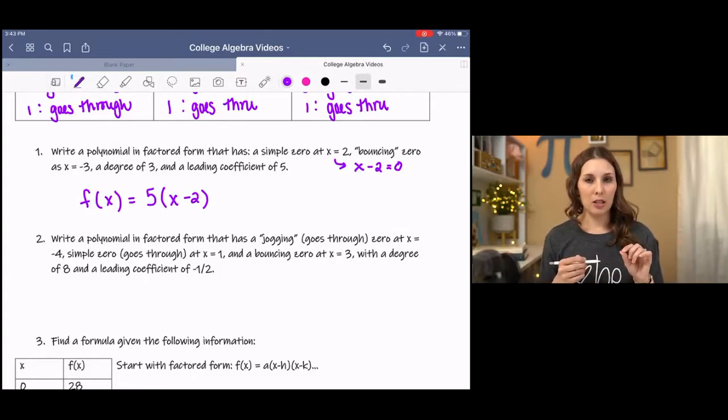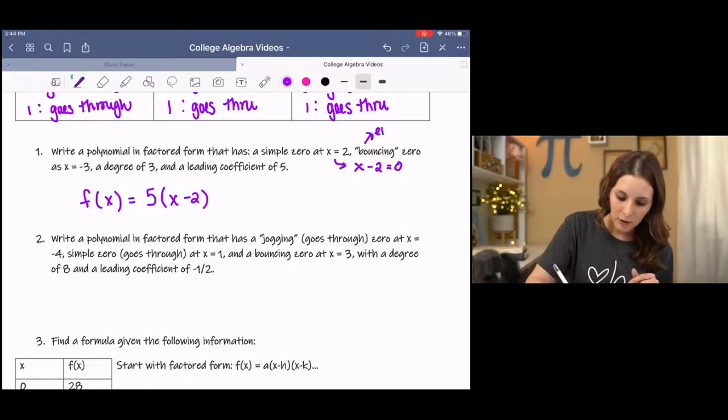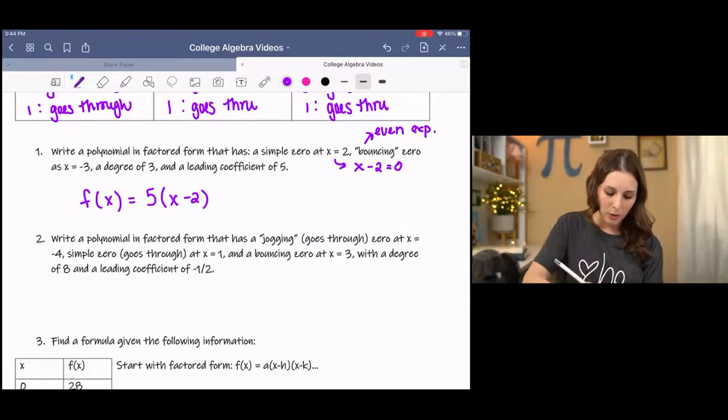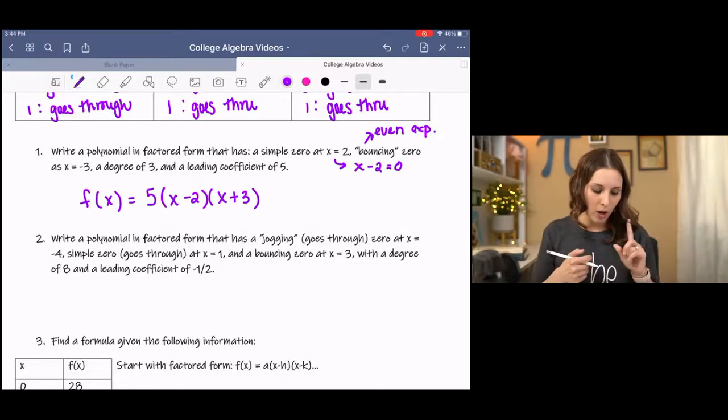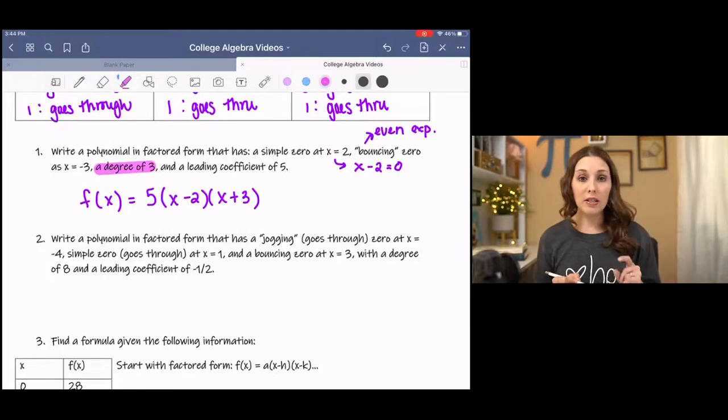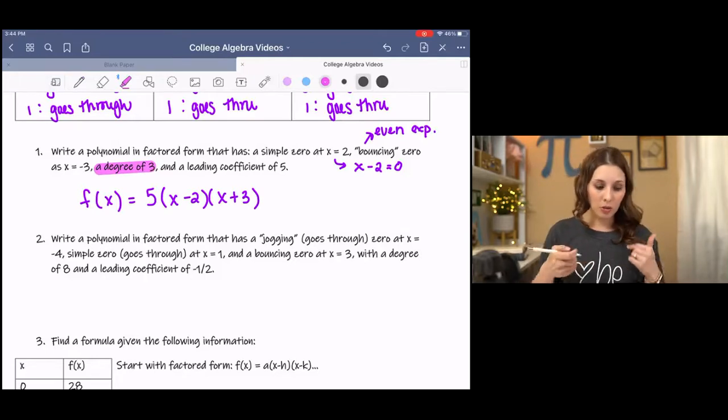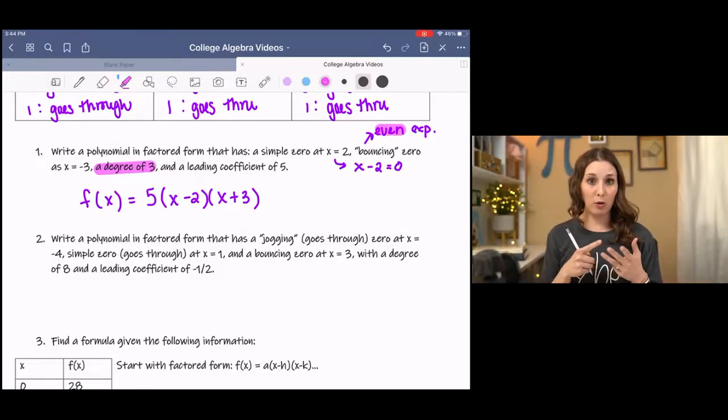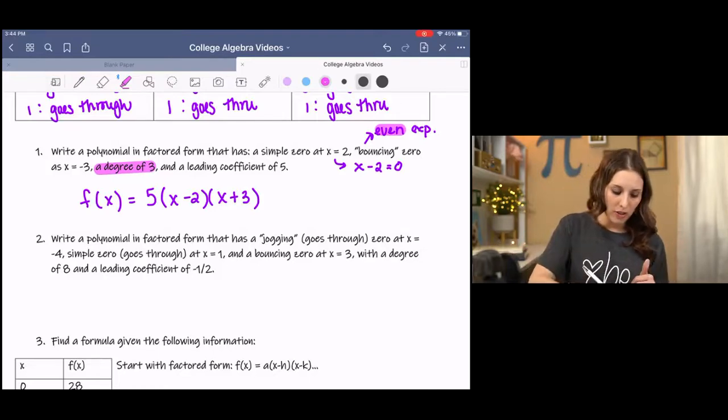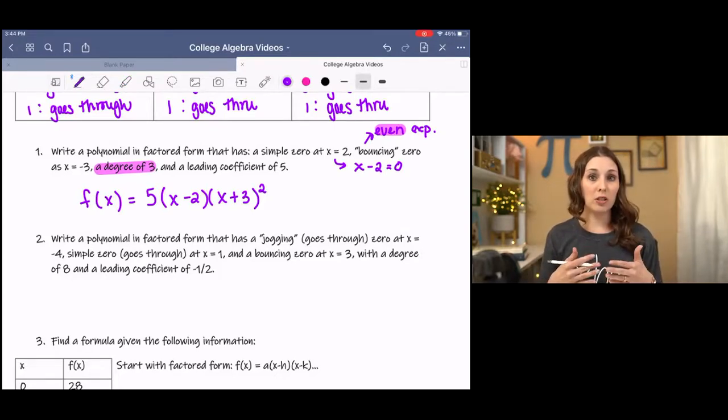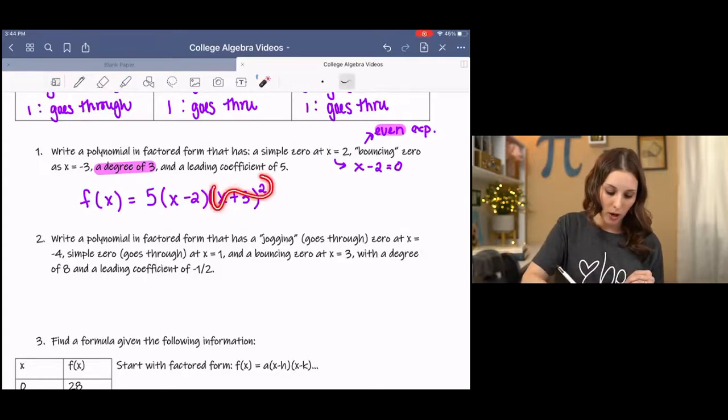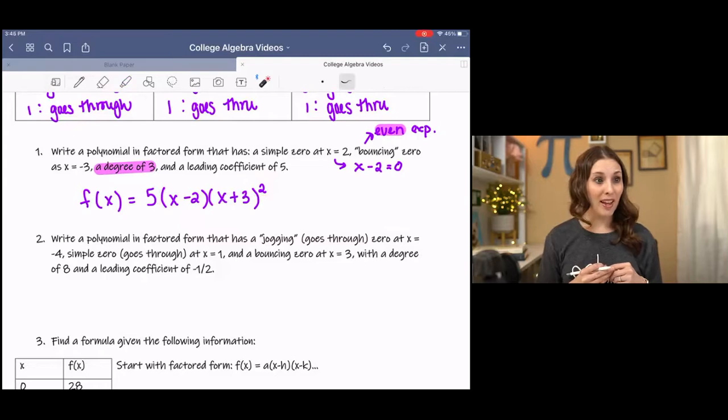But we're going to kind of pin that for a second, because we do know it's bouncing, so that indicates an even exponent at x equals negative three. So we're going to add three to the other side to make it a factor. And we also know that it has a degree of three. This means that all of the exponents on the x's need to add up to three, because we would be multiplying all the x's together. We also know that this is even, which means it has to be raised to the second, fourth, sixth, eighth, whatever power. So if this one is definitely to the first power, then this one needs to be to the second power so that it satisfies both conditions. It's a bouncing zero, and we have an entire degree of the polynomial is three. So we have x squared and x makes x to the third. And that's it. That's all at once.